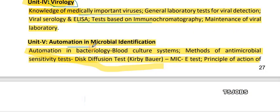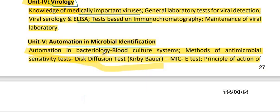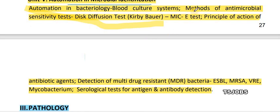Unit 5 covers automation in microbiology identification — microbiology, bacteriology, blood culture systems, and various methods including MIC and E-test.